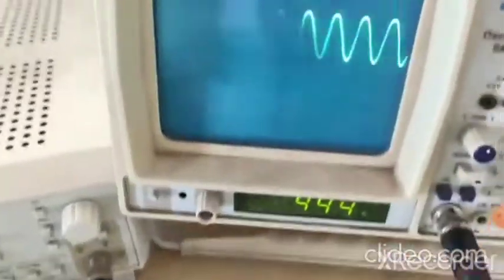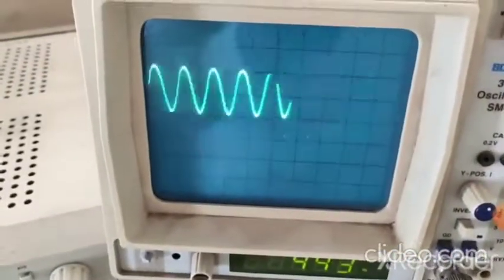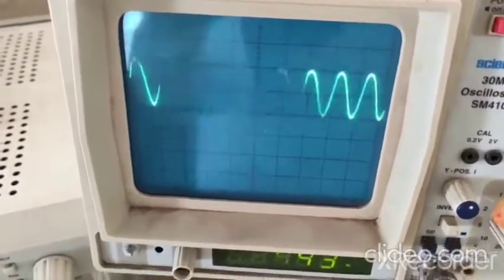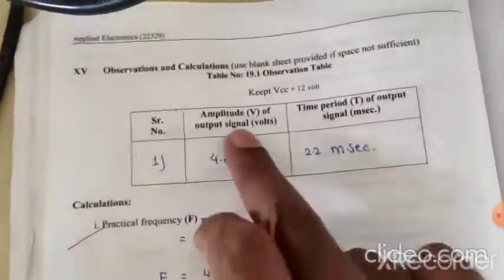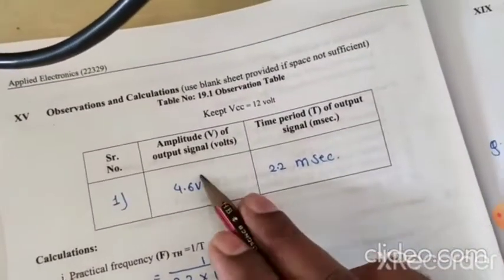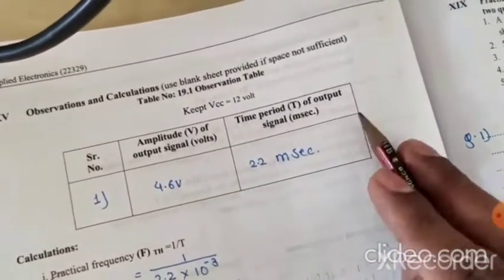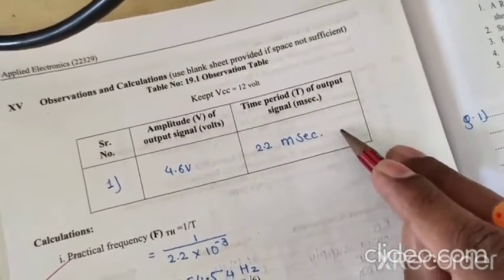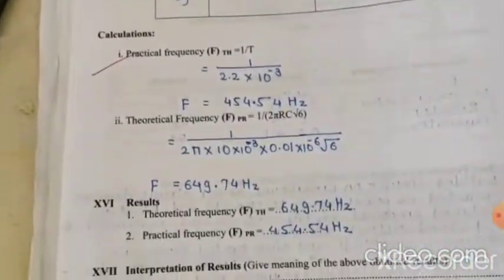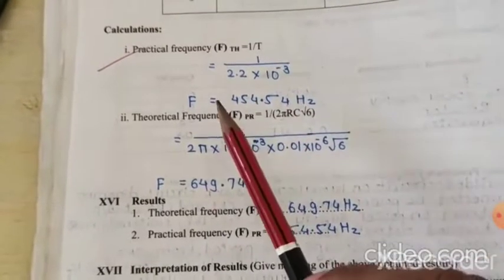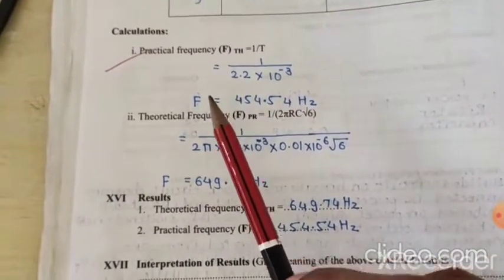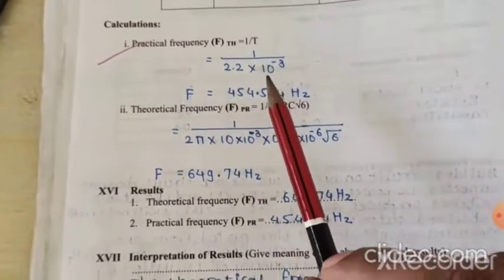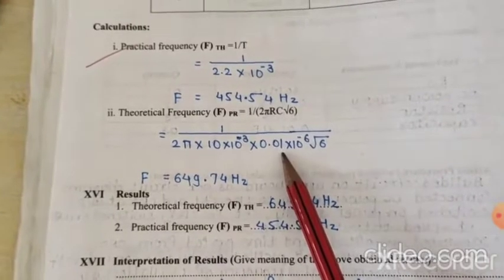Now let's move to the observation table. There are only two columns: amplitude of the output signal in volts, and time period of the output signal in milliseconds. Depending on this time period, we have to calculate the frequency — both practical frequency and theoretical frequency.